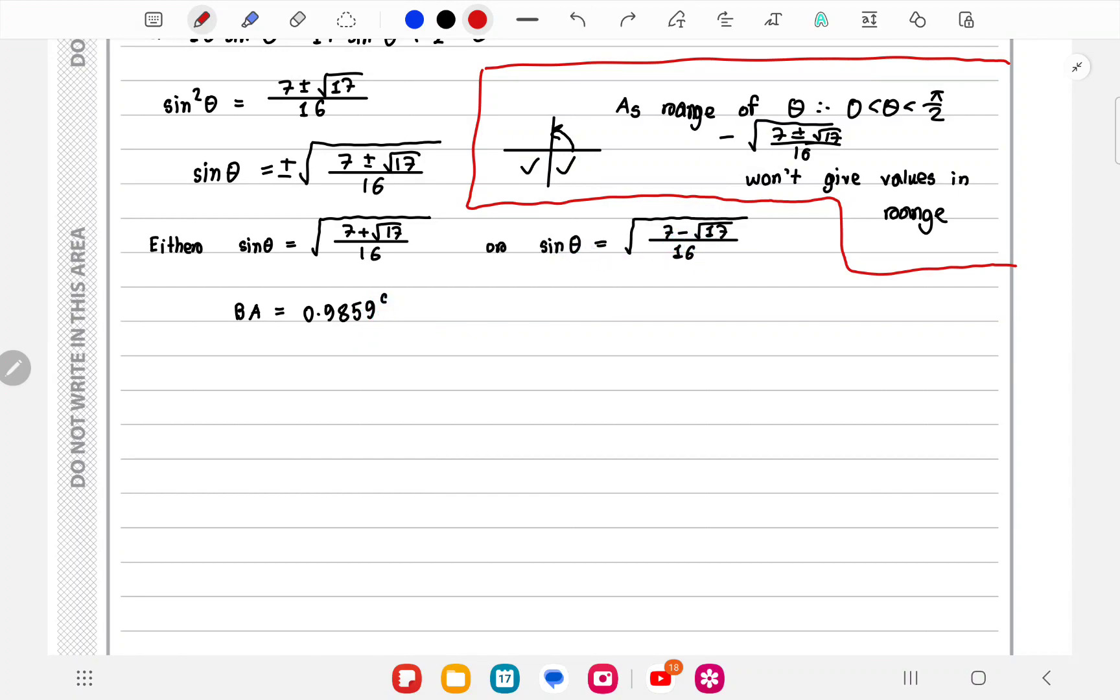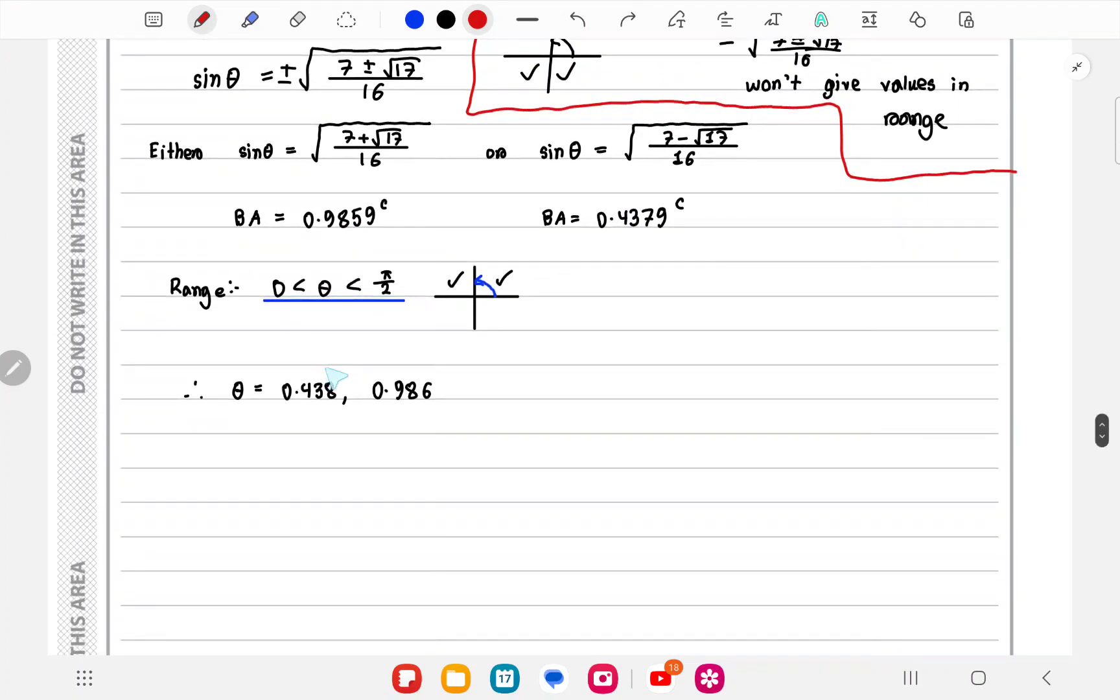So as the range is 0 to π/2, we'll just get this and this, so that's our answer.